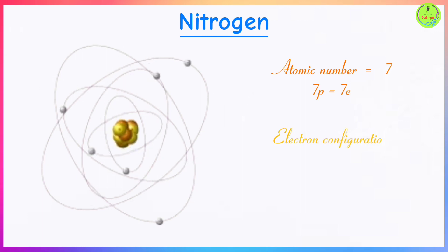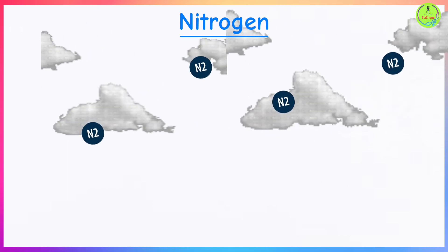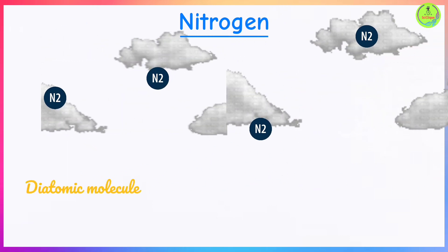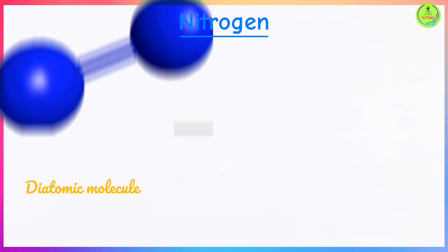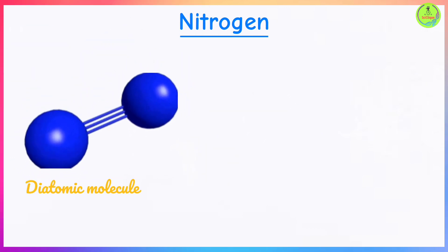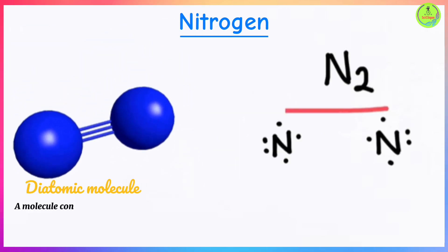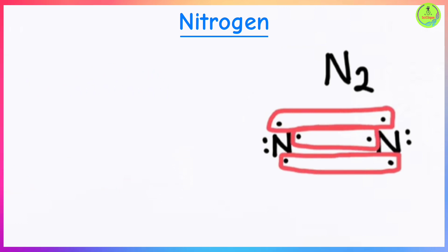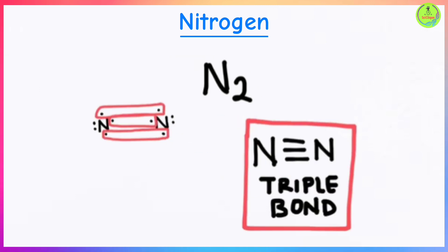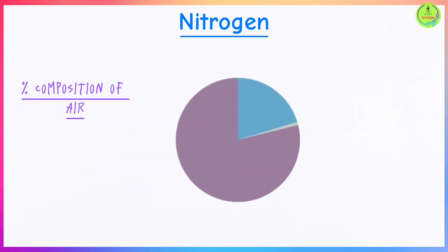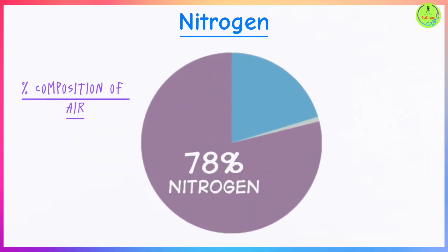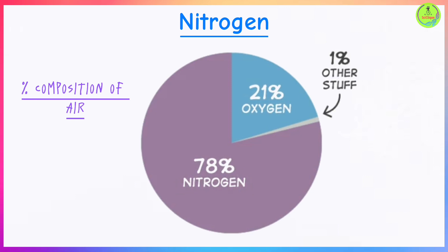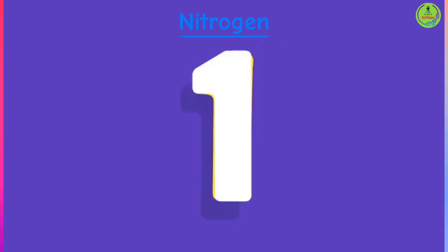When you arrange the electrons into energy levels, you get an electron configuration of 2, 5. Nitrogen exists in air as a gaseous element in the form of diatomic molecules — two nitrogen atoms covalently bonded with each other. Nitrogen is the most abundant gas in the atmosphere, comprising 78% by volume of atmospheric air.